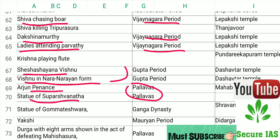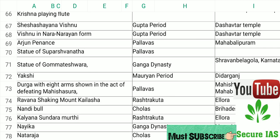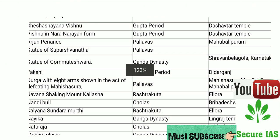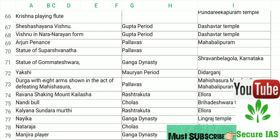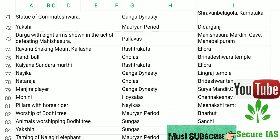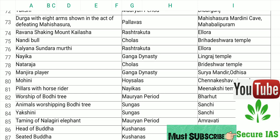At the time of the Pallava dynasty, Arjuna's Penance was created, along with the Statue of Suparshvanatha. During the Ganga dynasty, the Statue of Gommateshwara was made. Yakshi belongs to the Maurya period. Durga with eight arms shown in the act of defeating Mahishasura is from the Pallava period. Ravana Shaking Mount Kailash is Rashtrakuta. Nandi Bull belongs to the Chola period.